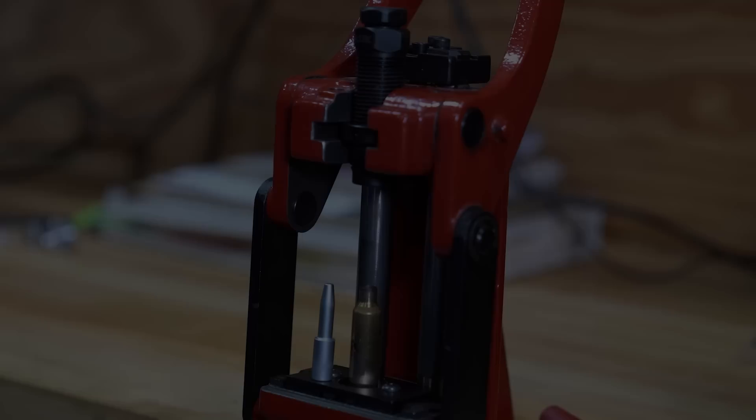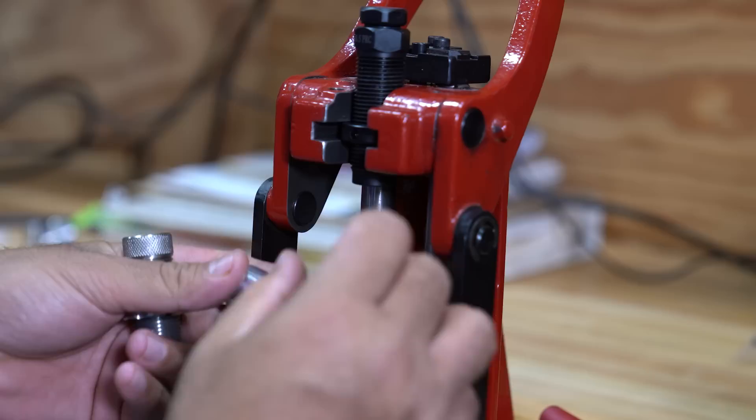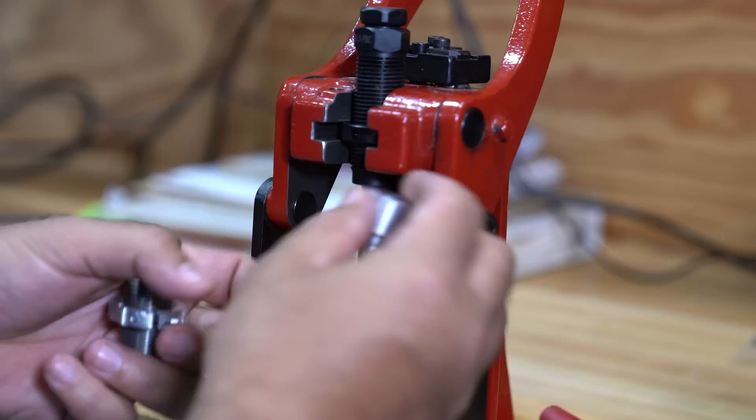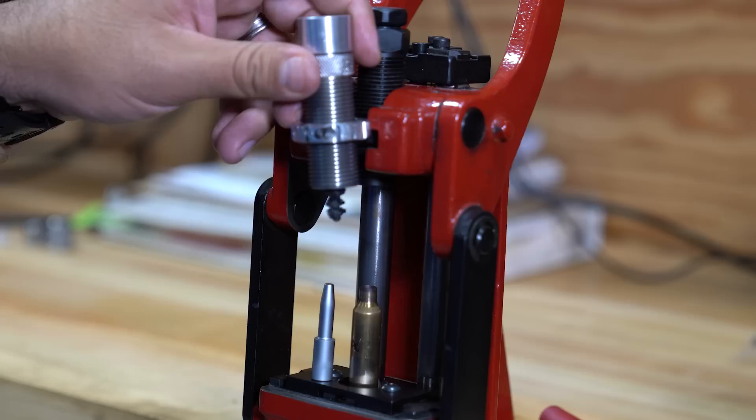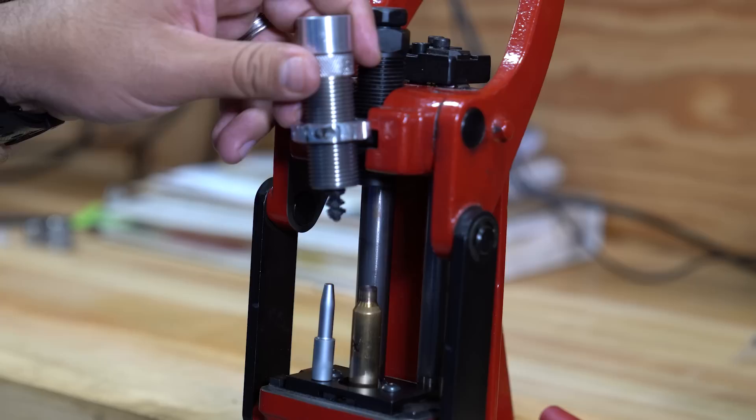One more thing before we go. If you have a 21st century die, do not get rid of it. We are soon going to be offering these adapters that allow you to put a brush in the adapter and allows you to use the 21st century die. This, obviously, allows you to put this in the press. And, just instead of having to brush your brass by hand, you can just pull on the handle and brush it.